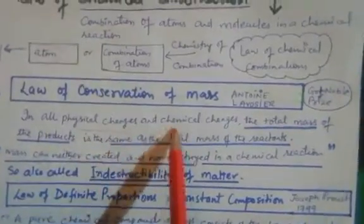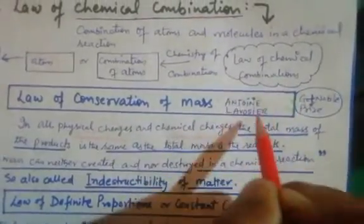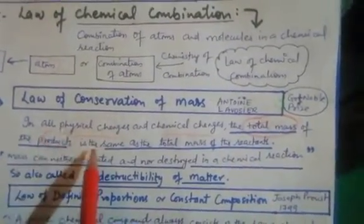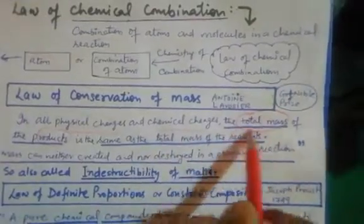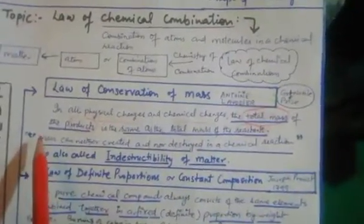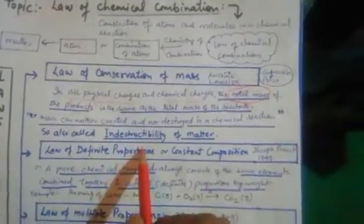The total mass of the products is the same as the total mass of the reactants. In other words, mass can neither be created nor destroyed in a chemical reaction. Because of this, matter is also called indestructible — meaning it is not breaking down or being lost.